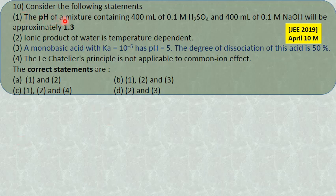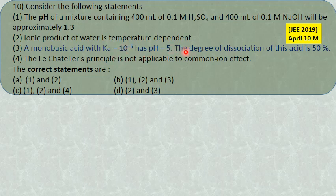Consider the following statements: (1) pH of a mixture of 400 mL of 0.1 molar H₂SO₄ and 400 mL of 0.1 molar NaOH will be approximately 1.3; (2) the ionic product of water is temperature dependent; (3) a monobasic acid with Ka = 10⁻⁵ has pH = 5 and degree of dissociation of 50%; (4) Le Chatelier's principle is not applicable to common ion effect. Statement 4 is wrong—it is actually applicable.